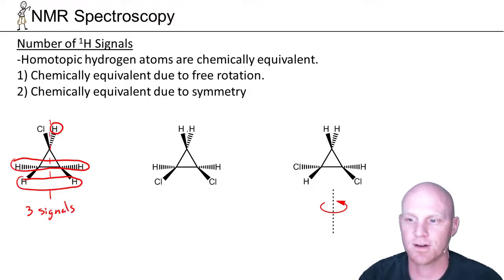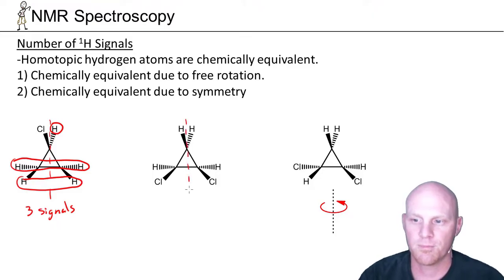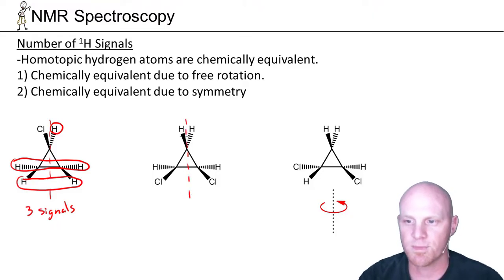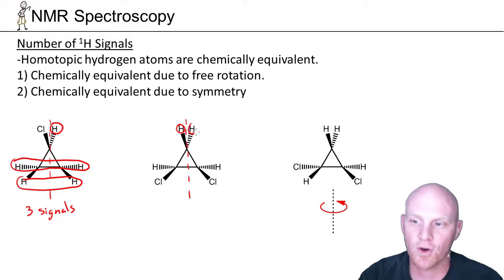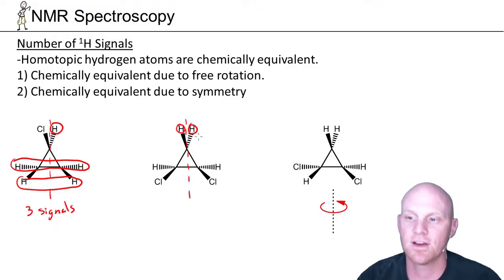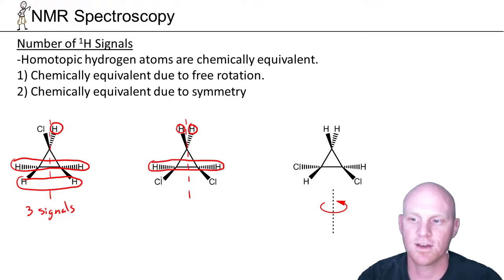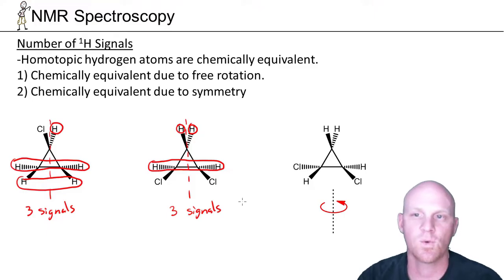In the next cyclopropane example, there's still a plane of symmetry, but the three wedged bonds don't match the three dashed bonds — so there's no front-to-back symmetry and wedged and dashed hydrogens are not equivalent. Due to the plane of symmetry, the two dashed hydrogens are equivalent. We again count three unique environments and therefore three signals in the H NMR spectrum.